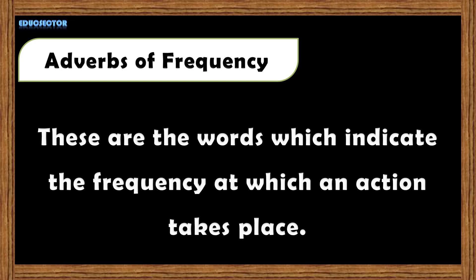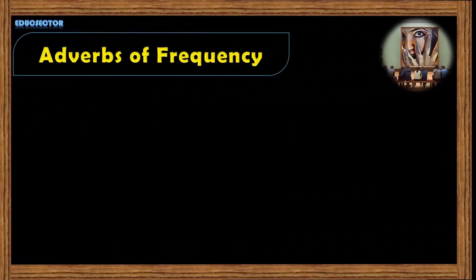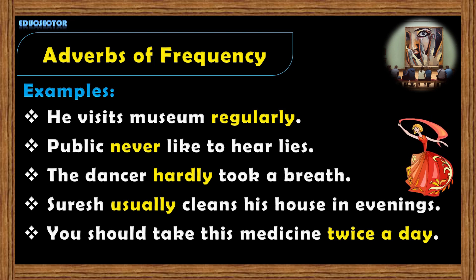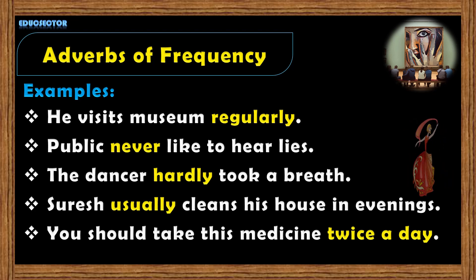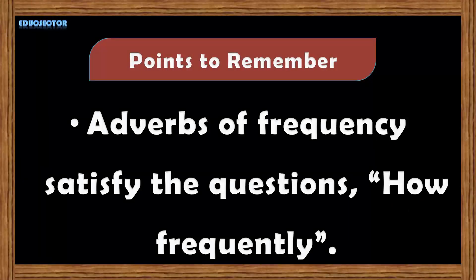Adverbs of frequency are the words which indicate the frequency at which an action takes place. For examples: 'He visits museum regularly.' 'Public never like to hear lies.' 'The dancer hardly took a breath.' 'Suresh usually cleans his house in evenings.' 'You should take this medicine twice a day.' Here the words regularly, never, hardly, usually, twice a day are all adverbs of frequency. Adverbs of frequency satisfy the question 'how frequently,' for example: 'How frequently does he visit the museum?'